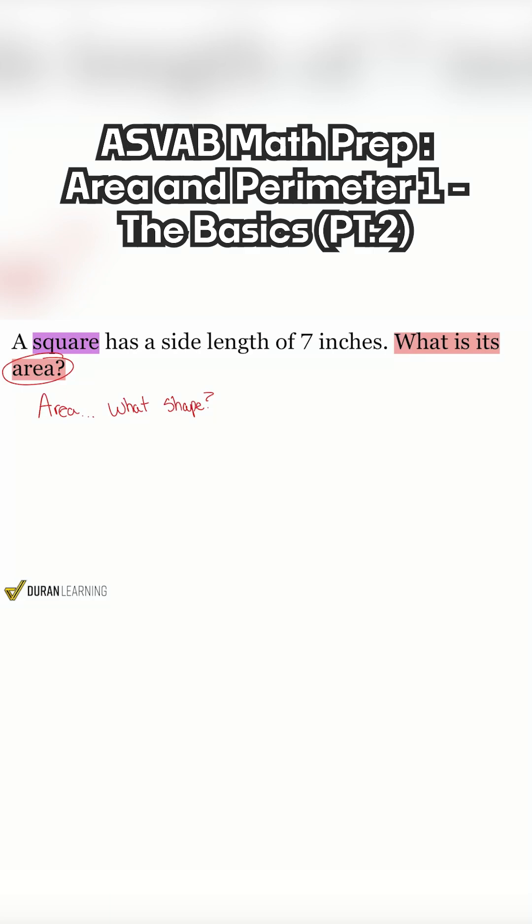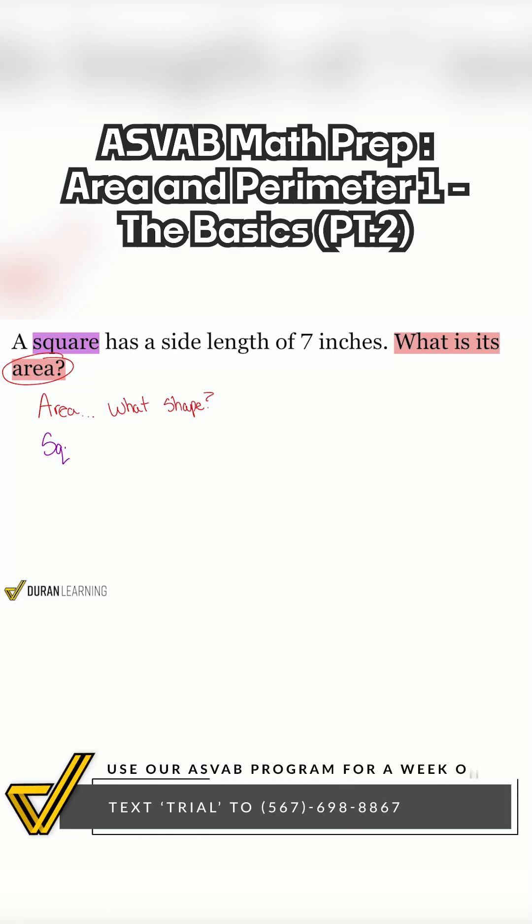From there, if we want a square, we know a formula for it. Pop quiz, everybody. What is the area of a square?